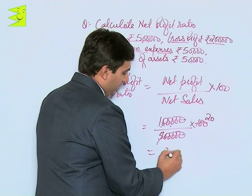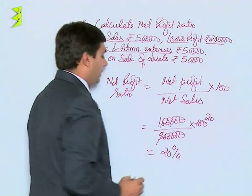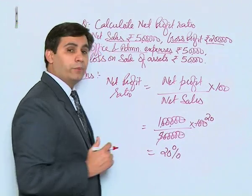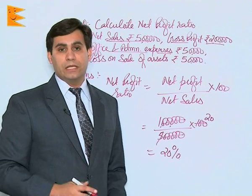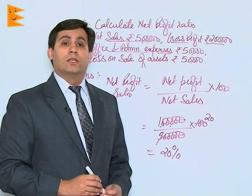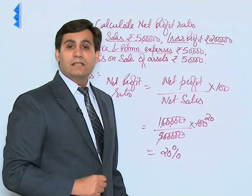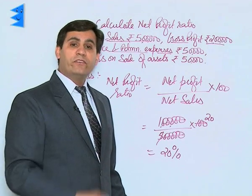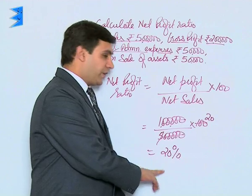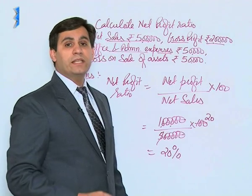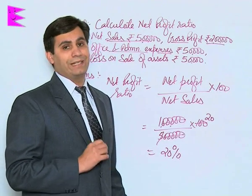On dividing and calculating, we get it as 20 percent. That means the net profit ratio for the given concern is 20 percent. On analysis, we can say that for every 100 rupees invested, this firm is earning an average net profit of rupees 20.